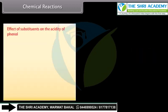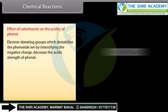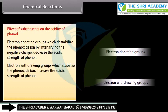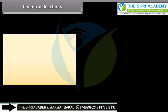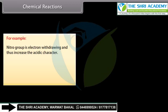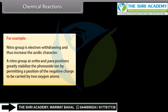Electron donating groups which destabilize the phenoxide ion by intensifying the negative charge decrease the acidic strength of phenol. Electron withdrawing groups which stabilize the phenoxide ion increase the acidic strength of phenol. Greater the number of electron withdrawing groups at ortho and para positions, more is the acidic character of phenol. For example, nitro group is electron withdrawing and thus increases the acidic character. A nitro group at ortho and para positions greatly stabilizes the phenoxide ion by permitting the negative charge to be carried by 2 oxygen atoms.